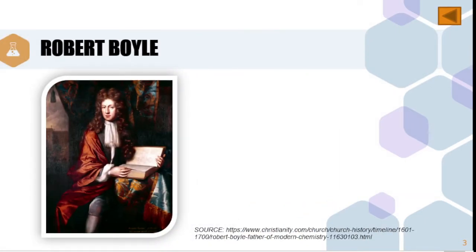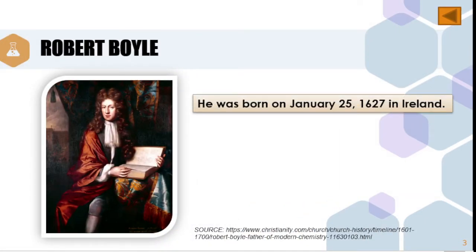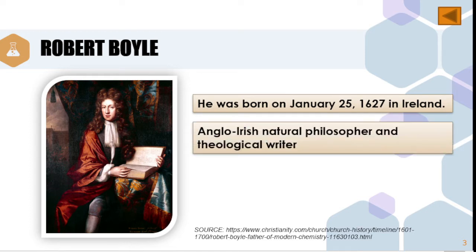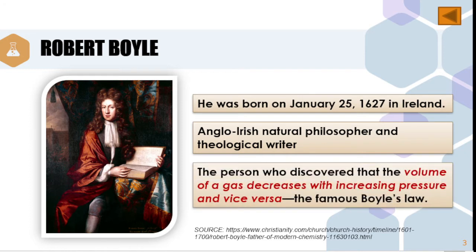Who is Robert Boyle? Robert Boyle was born on January 25, 1627 in Ireland. He is an Anglo-Irish natural philosopher and theological writer. He is the person who discovered that the volume of a gas decreases with increasing pressure and vice versa. This is the famous Boyle's Law.